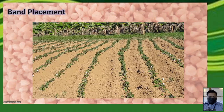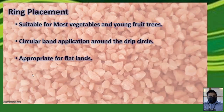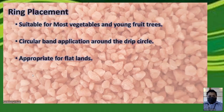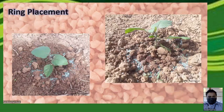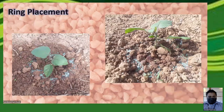Ring placement is suitable for most vegetable plants and for young fruit trees. You apply a circular band of fertilizer around the drip circle of your plants, and this method is more suited for flat topography. The drip circle is the area where water drips off the edges of the leaves when irrigated or rained on — and that is where most of the feeding roots of your plants are located, making it the best area in which to apply your fertilizer.